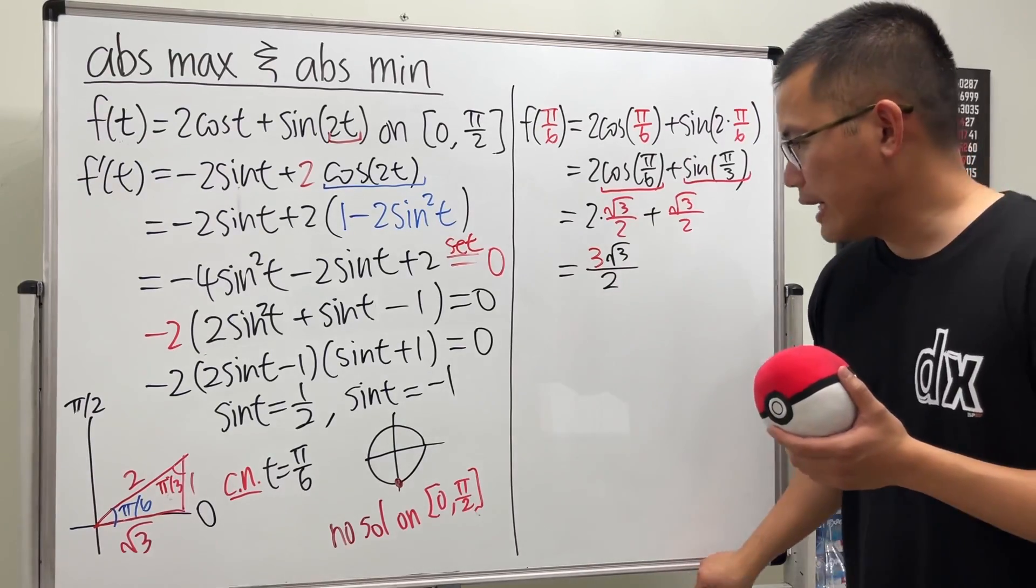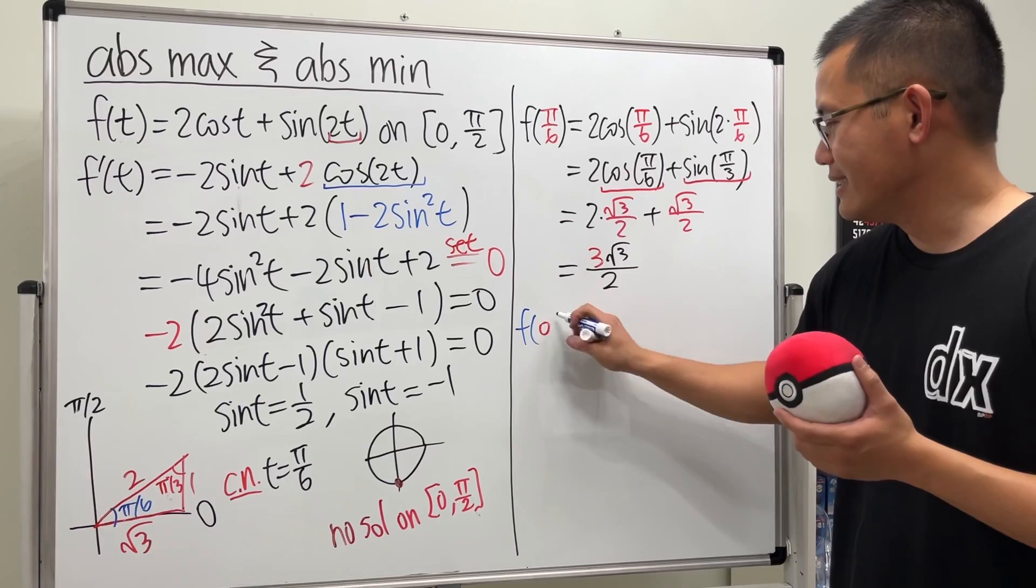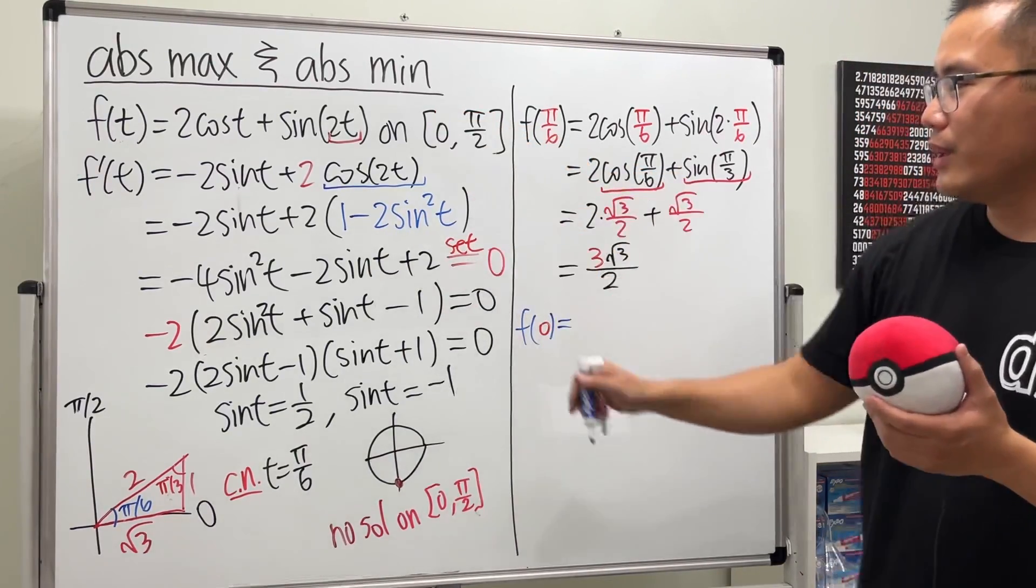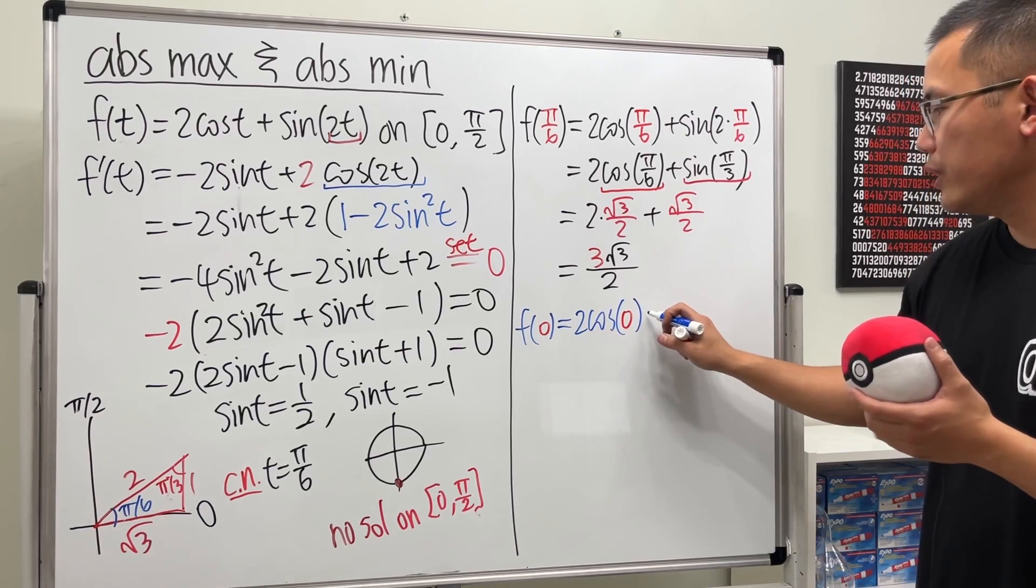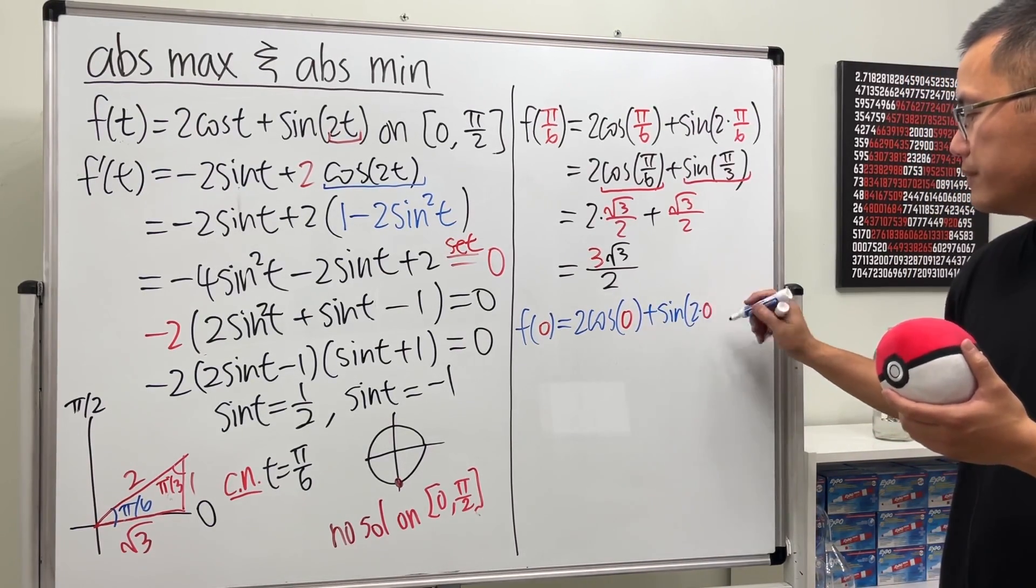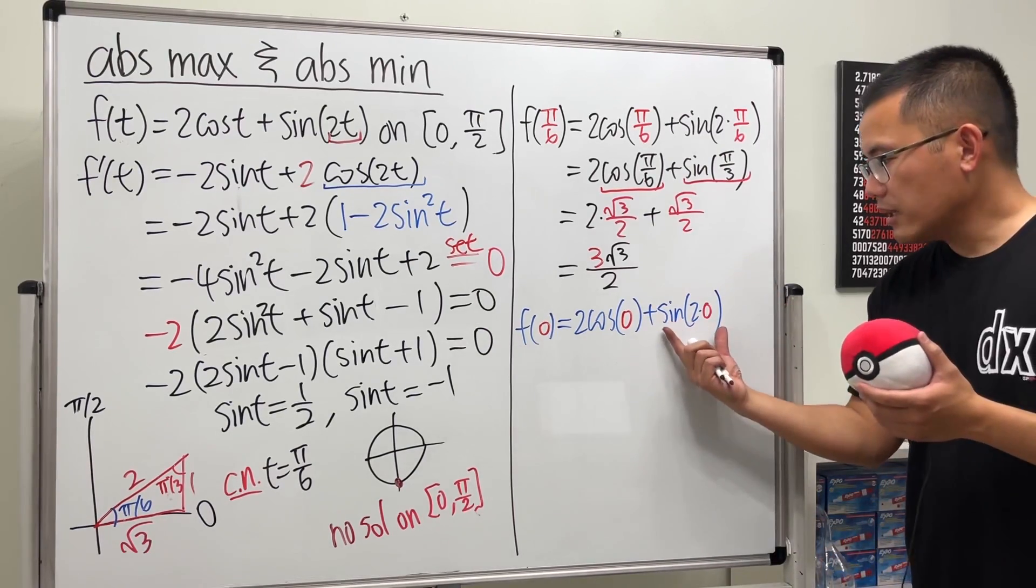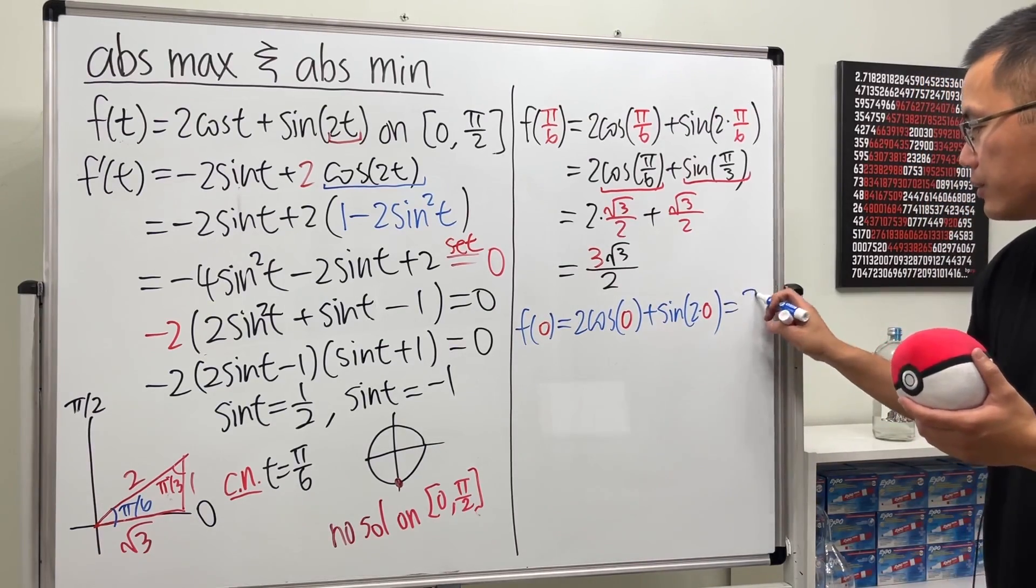Okay, and then continue. Let's go ahead and check 0, which is the nicest number. Put 0 into the original. So we have 2 times cos(0). And then we add sin(2 times 0). Sin(0) is just 0. Cos(0) is 1. 1 times 2. All together, we get 2.